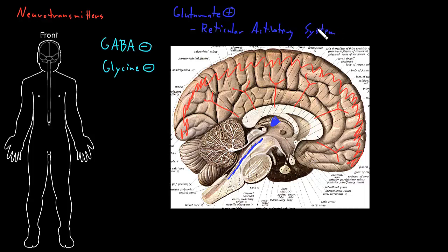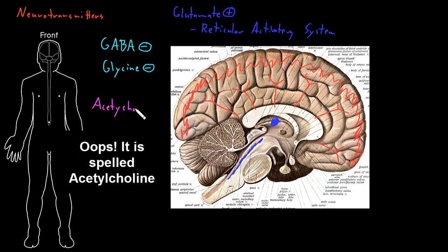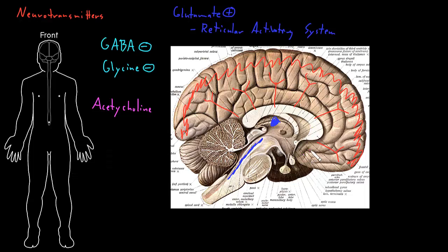The next neurotransmitter to mention is acetylcholine. There are certain nuclei in the frontal lobe that send diffuse projections up to a number of areas of the cerebral cortex, releasing acetylcholine. These are called the basalis nucleus and the septal nuclei.